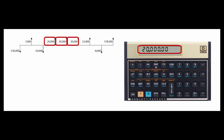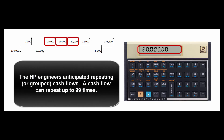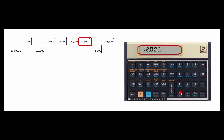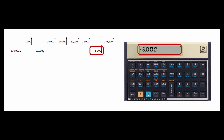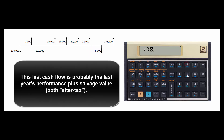Then we get $20,000 three years in a row. Instead of entering $20,000 CFJ three separate times, there's a shortcut: enter $20,000 G-CFJ, then hit 3 G-NJ. That tells the calculator this is a grouped, repeating cash flow that repeats three times. Next we get $12,000 in, then $8,000 out, and finally $178,500 in.